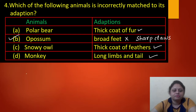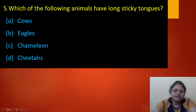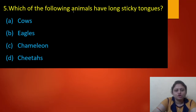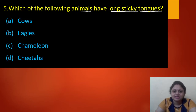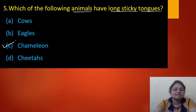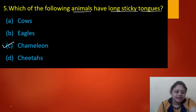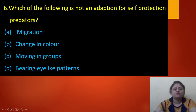Next question: which of the following animals have long sticky tongues? Option A: cows. Option B: eagles. Option C: chameleon. Option D: cheetahs. The correct answer is option C — chameleon — because it has long sticky tongues.